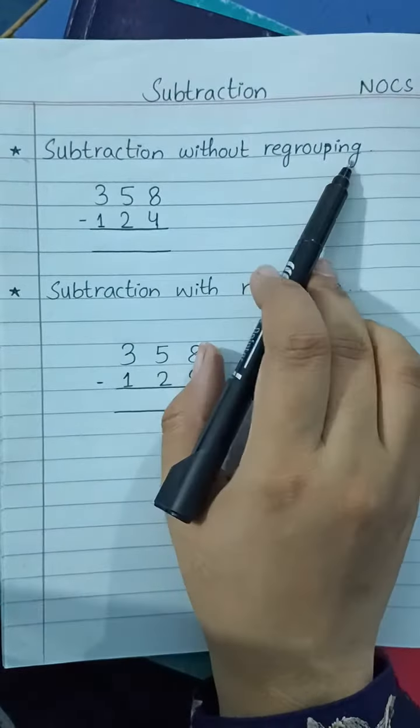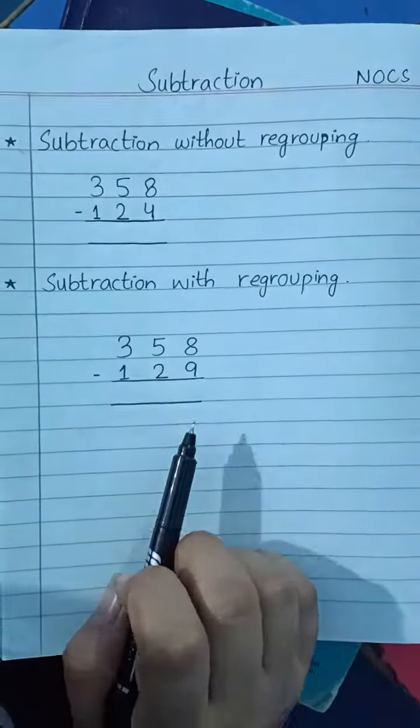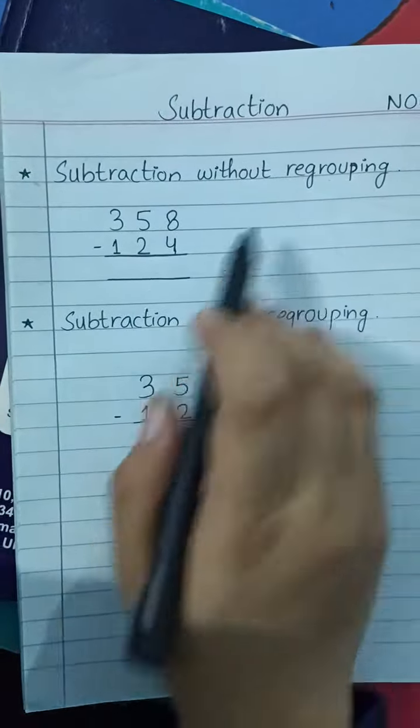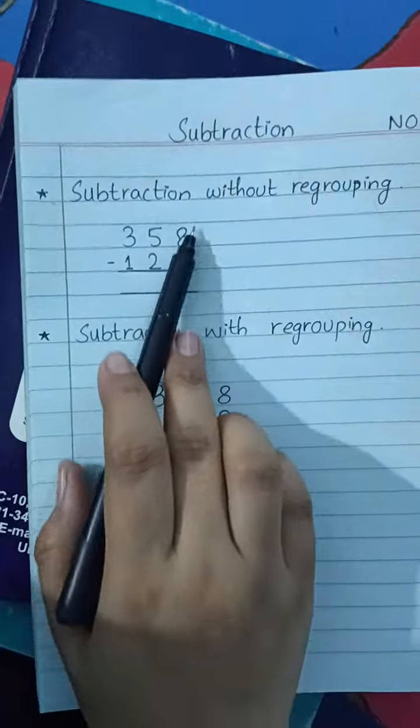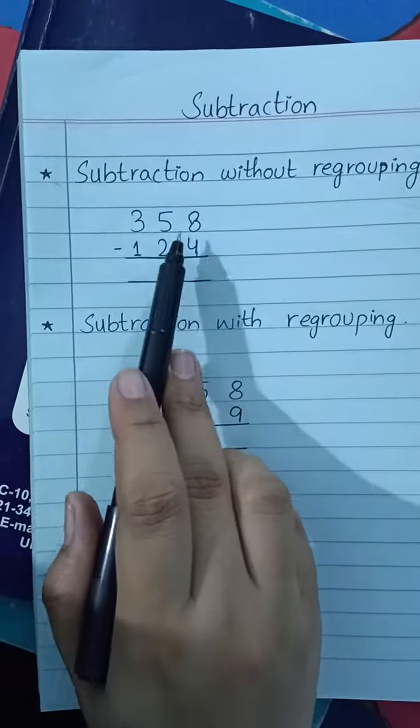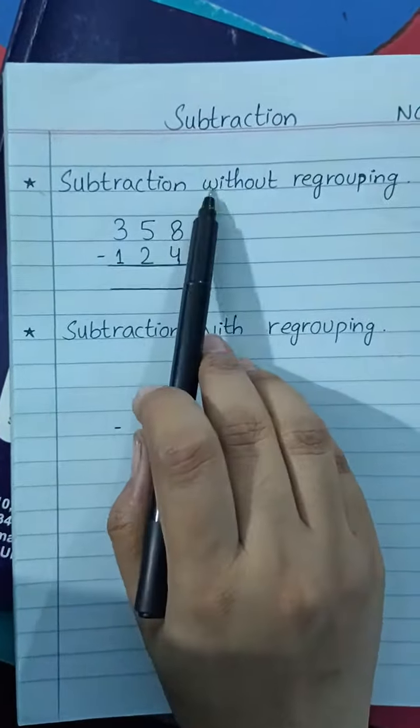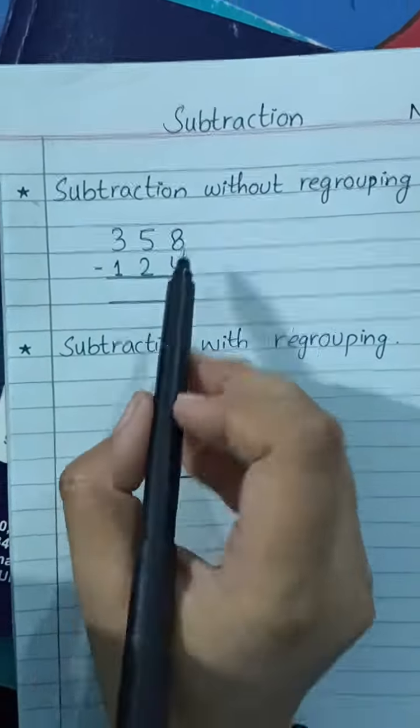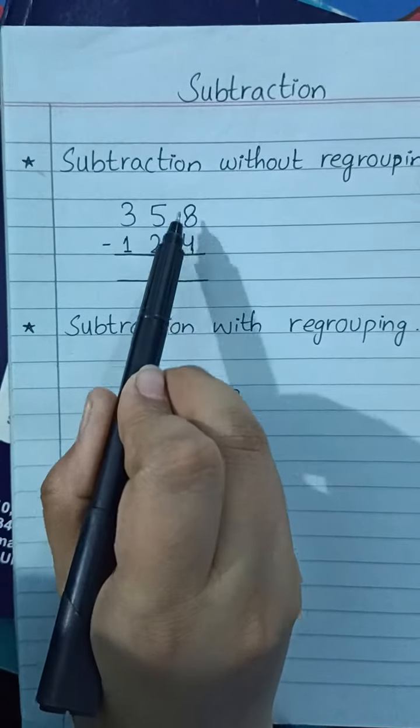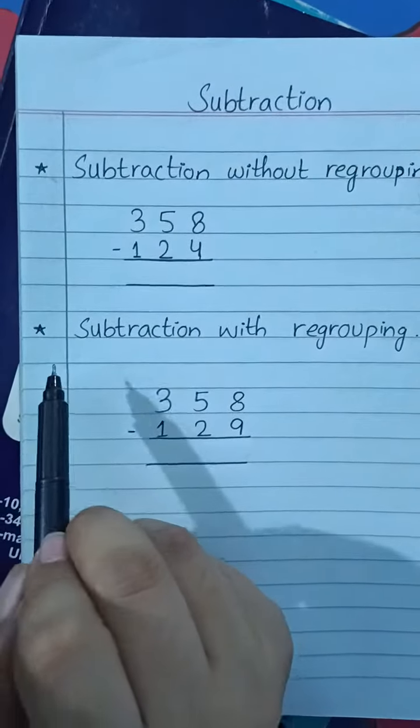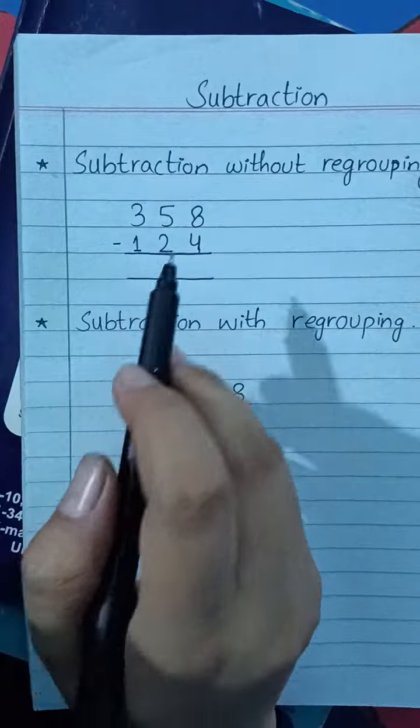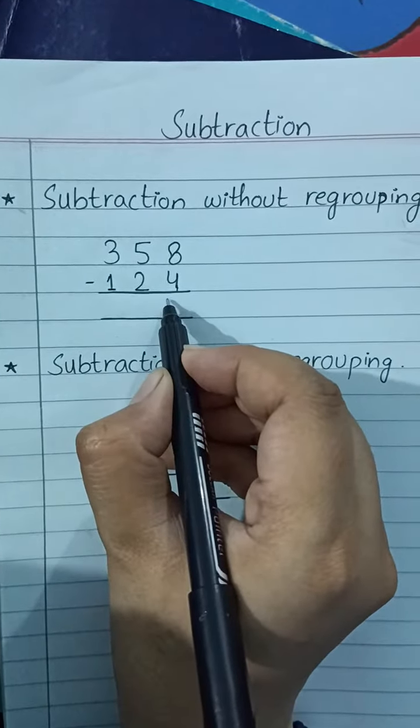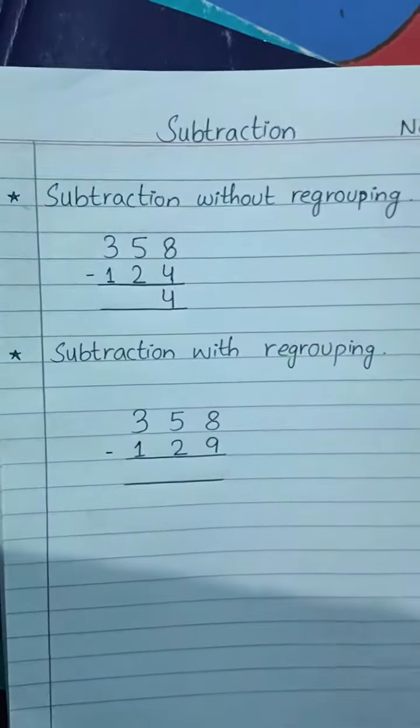Let's learn subtraction without regrouping and with regrouping. First, without regrouping. Subtraction without regrouping means you are not going to take any kind of borrow from any number. It's simple subtraction, like you have to subtract 4 from 8.